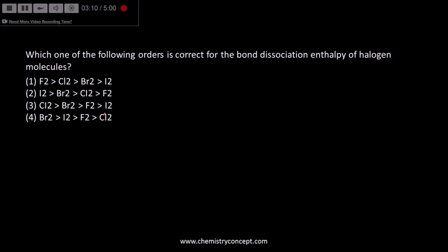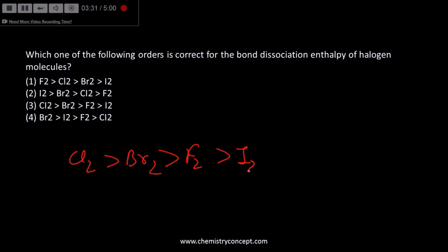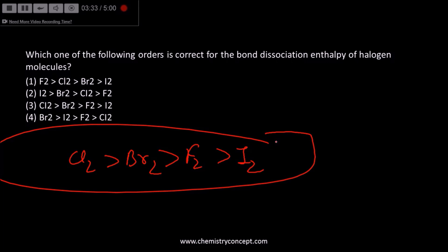Bond dissociation enthalpy is weak for fluorine because of its very small size, which causes inter-electronic repulsions, making it easier to break the fluorine bond. Thus the order becomes Cl > Br > F > I. Stay tuned for more updates on NEET and more videos on organic, inorganic, and physical chemistry. Don't forget to subscribe and please leave your feedback in the comments. Thanks.